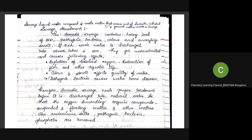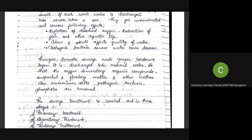Before water is sent into natural water bodies, this sewage water has to be properly treated so that organic material, suspended matter, floating matter, pathogenic bacteria, ammonium salts, and phosphates are completely removed before it enters the natural water.